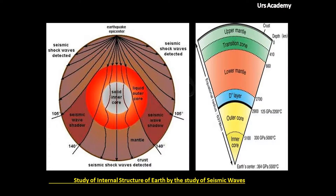Now, how are earthquake waves used to study the internal structure of Earth? Primary and secondary waves travel from the focal point deeper inside the Earth. They refract — deviating from their normal course. They are not traveling in a straight line; they diffract as they move from rarer to denser medium toward the core, bending toward the normal. When they move from denser back to rarer, they bend away from the normal, so the diffraction path keeps changing.